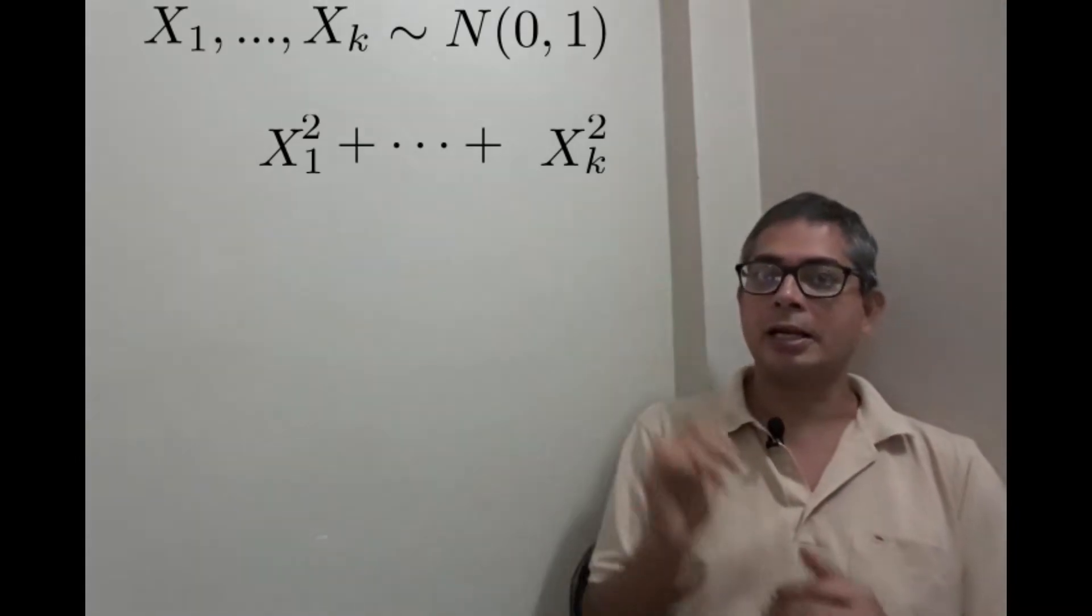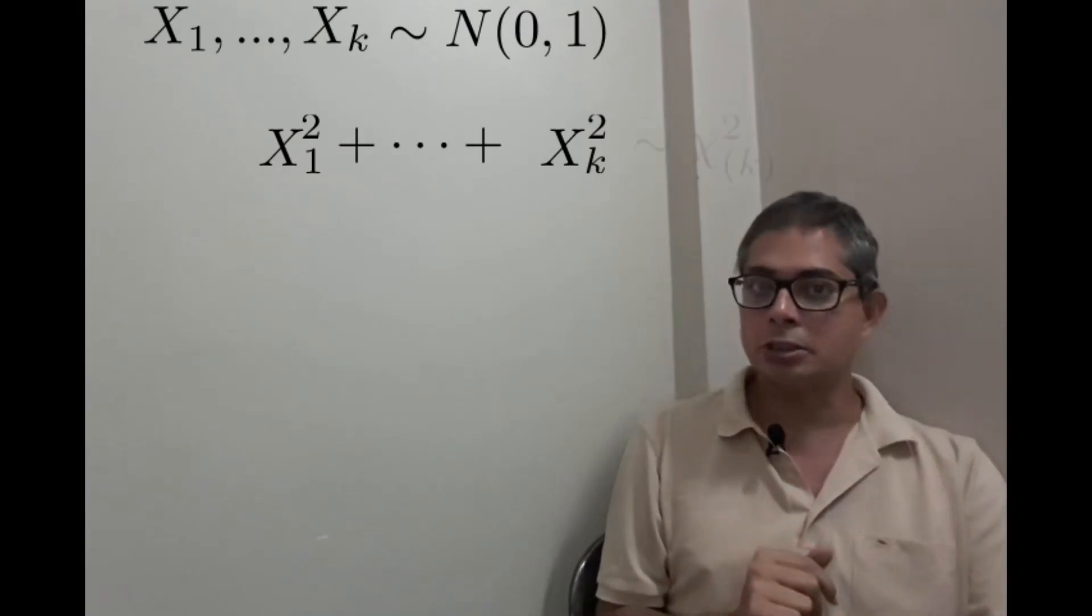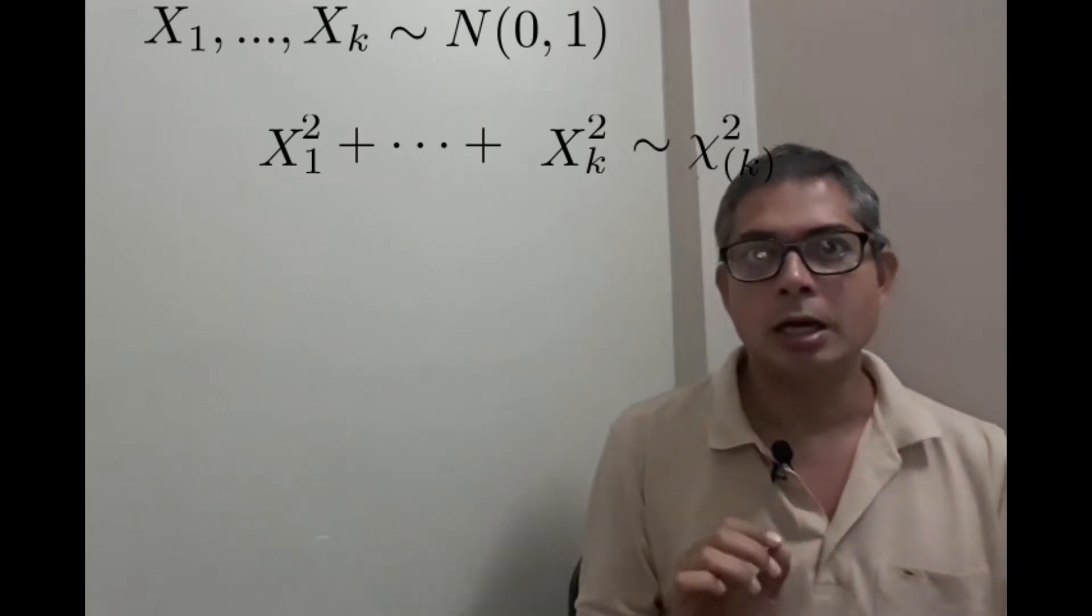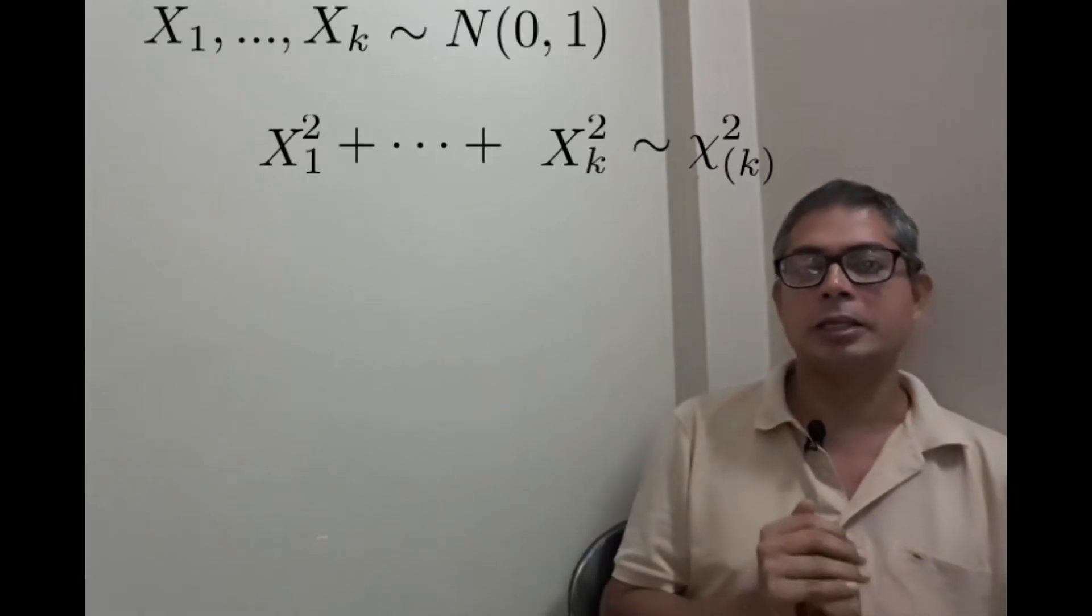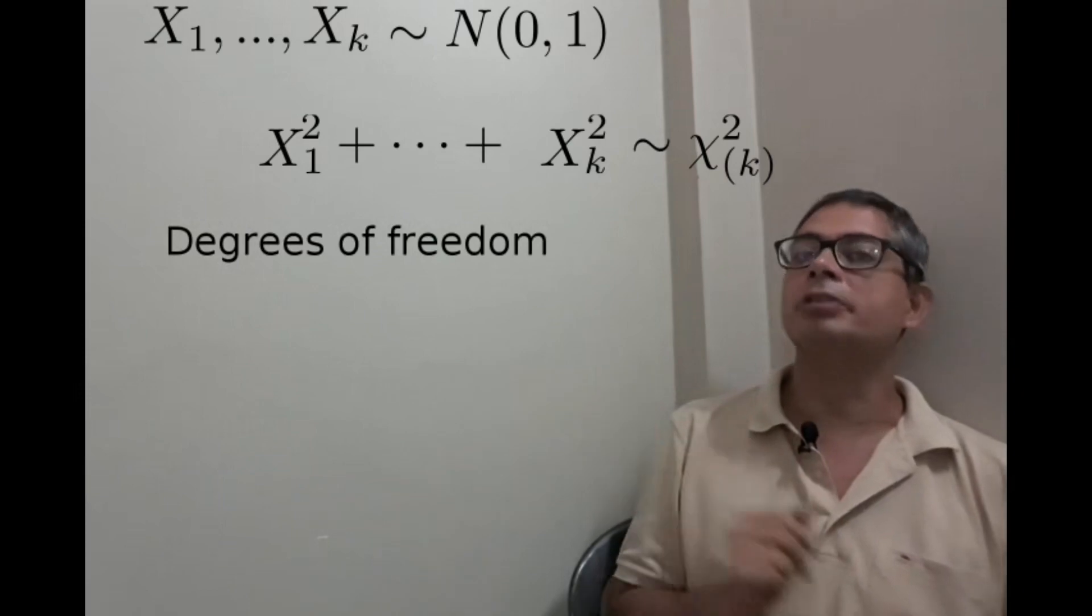The distribution of this random variable is called the chi-square distribution with k degrees of freedom. Now this k that you see inside the subscript is called the degrees of freedom.